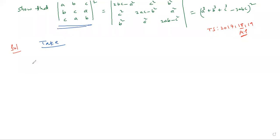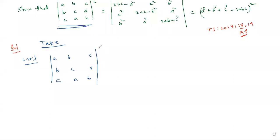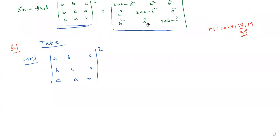Take LHS as it is — LHS is the determinant of [a,b,c; b,c,a; c,a,b] whole square. If you expand it, you should get the RHS. This is the proof: LHS equals RHS.